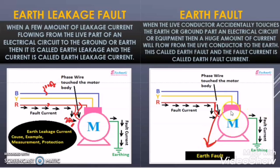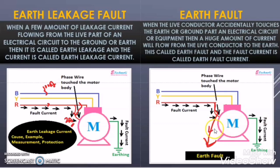Then what happened in this situation? There is a phase loss in the motor. Before, there was 100 Ampere of current flowing through the R winding of the motor in healthy condition. But when something happens in the R phase, then there will be zero current flowing in the R winding of the motor and all the current is flowing now to the ground. So such a condition of fault is called earth fault condition.